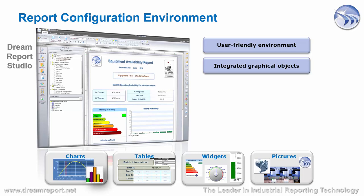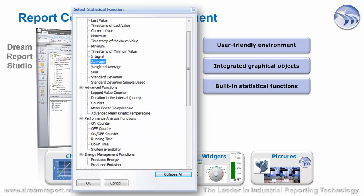As important — maybe even more important than all the graphical objects — are the built-in statistical functions. There are over 40 of these functions in which we can take raw data from any data source and present it in the context of the report. Included are the typical min, max, average, and standard deviation type calculations, as well as many more advanced functions — for instance, counter calculations for reporting on energy meters, performance analysis functions for doing up and down time reporting, energy management functions, and a host of others.